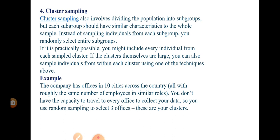There is a basic difference between stratified and cluster sampling. In stratified sampling, we divide the population into subgroups based on general characteristics ourselves. In cluster sampling, the clusters are already divided — you don't need to divide them. Instead of sampling individuals from each subgroup, you randomly select the entire subgroup.